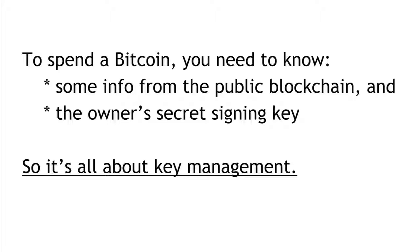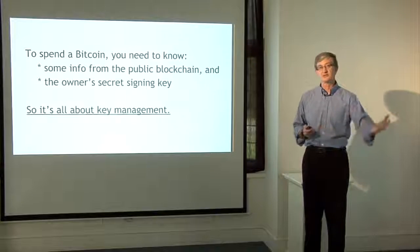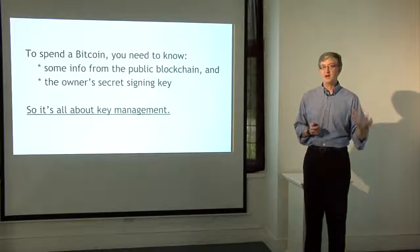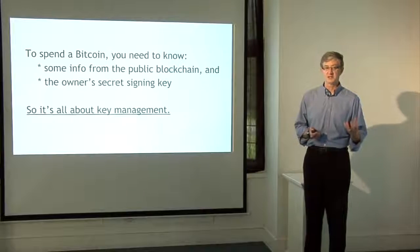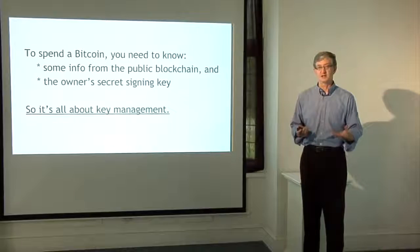Just to review, in order to spend a Bitcoin, you need to know two kinds of things. First, you need to know some information stored on the public blockchain — the identity of the coin and how much it's worth. Along with that, you also need to know the secret key of the owner. The information on the public blockchain you can always get back, but the secret signing key is the thing you'd better keep track of. So in practice, when we talk about how you store your Bitcoins, what we're really talking about is how you store and manage your keys.